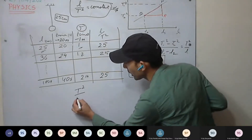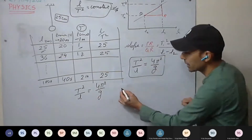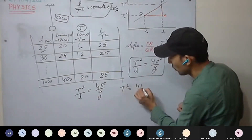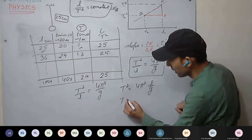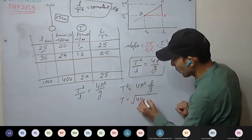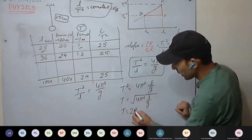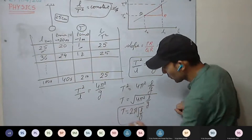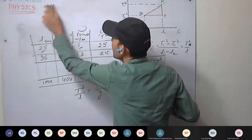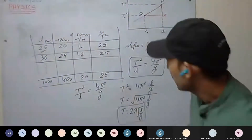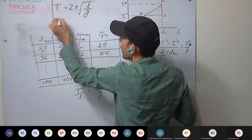From T²/L = 4π²/G, we get T² = 4π²L/G. Taking the root on both sides: T = √(4π²L/G) = 2π√(L/G). This formula you have to remember. Time period = 2π√(L/G).